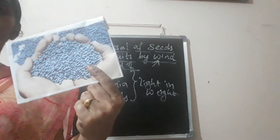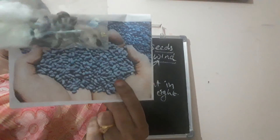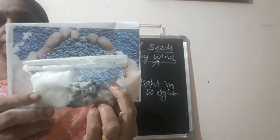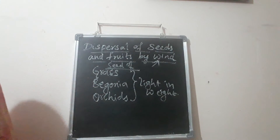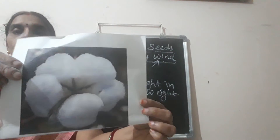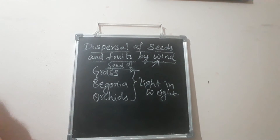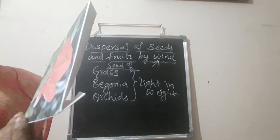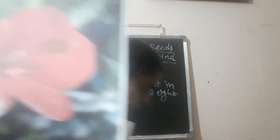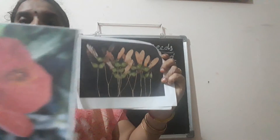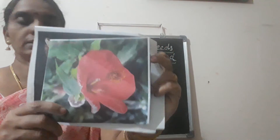Here are cotton seeds - you can identify them easily as they have hair-like structures that help them move through the air from one place to another. This is a cotton flower. And this is the maple flower - you can see the seed with its wing-like structures attached.